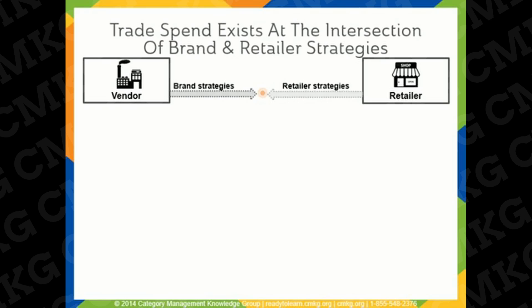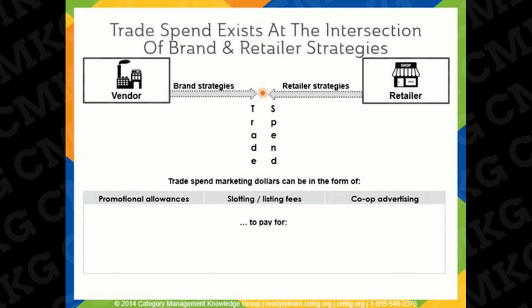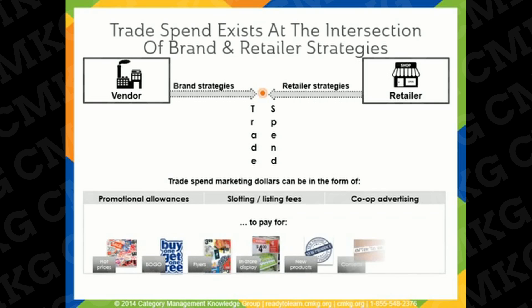Trade spend occurs at the intersection between the vendor's brand strategies and the retailer's strategies. Trade spend marketing dollars can be in the form of promotional allowances, slotting or listing fees, or COOP advertising, which goes towards things like hot prices, buy one get one free, flyers, display, new products, contests, and in-store features.